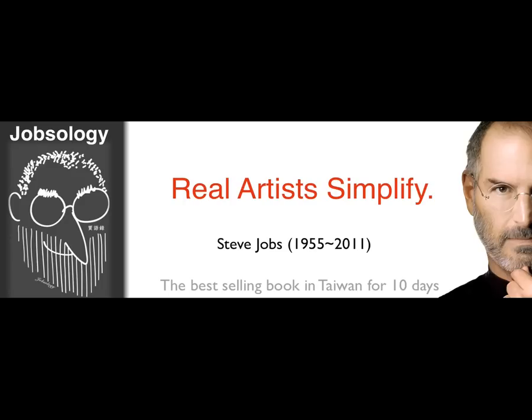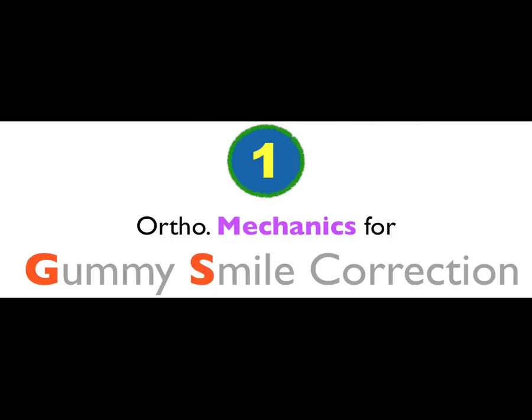I remember there is a famous book I'm going to tell you about. This is a famous book that was published two years ago and became the best-selling book in Taiwan for 10 days. It was made by dentists. In that famous book, Culture Biology, there is a famous collection of speeches talking about real art and simplicity. So I am going to simplify my treatment for gummy smile correction within three categories, and I hope that everyone in this group will be able to execute my treatment plan. First is the orthodontic mechanics for gummy smile correction.